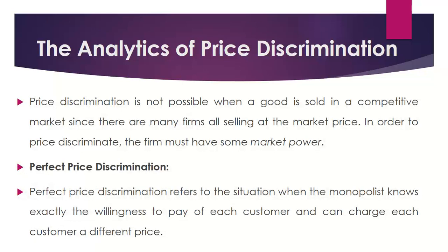Price discrimination is not possible when a good is sold in a competitive market, since there are many firms all selling at the market price. In order to price discriminate, the firm must have some market power, which is possible in the case of monopoly. Perfect price discrimination refers to the situation when the monopolist knows exactly the willingness to pay of each customer and can charge each customer a different price.